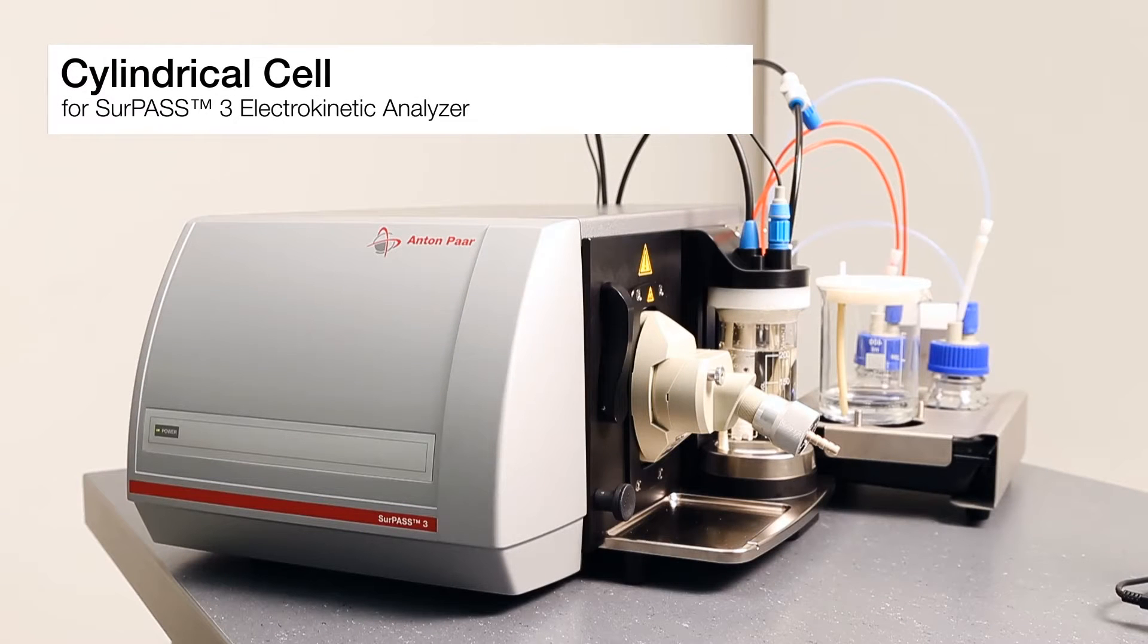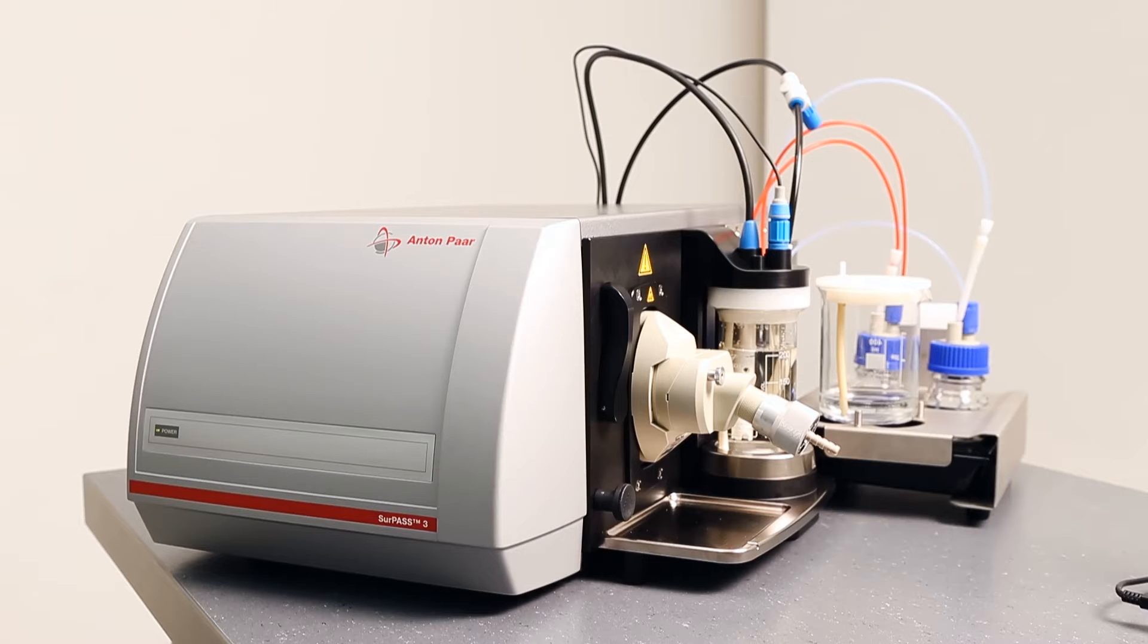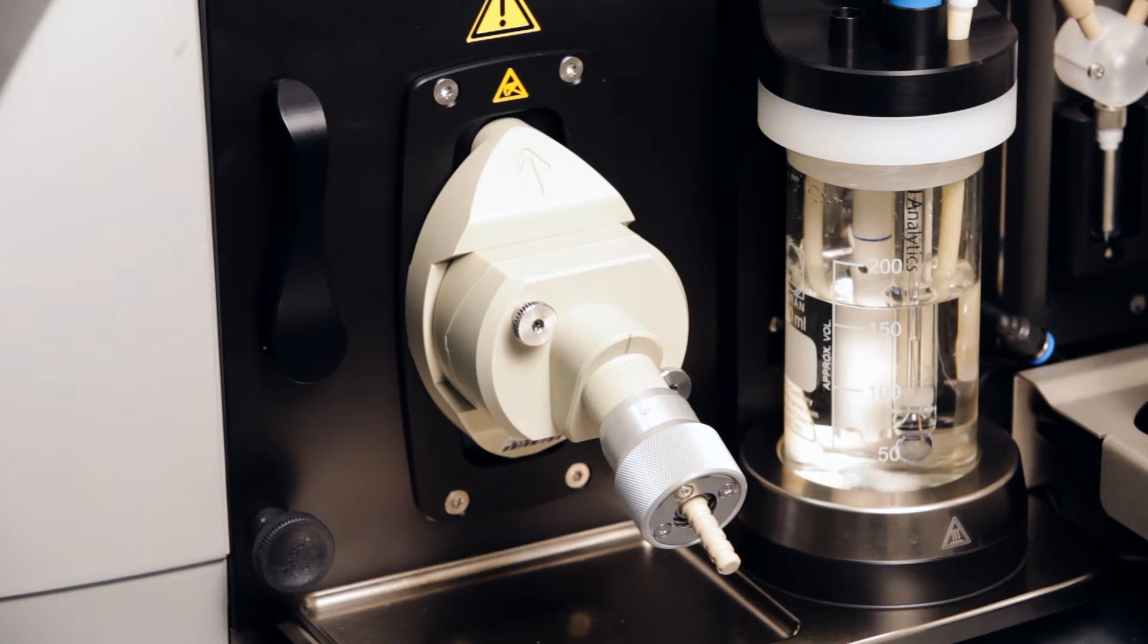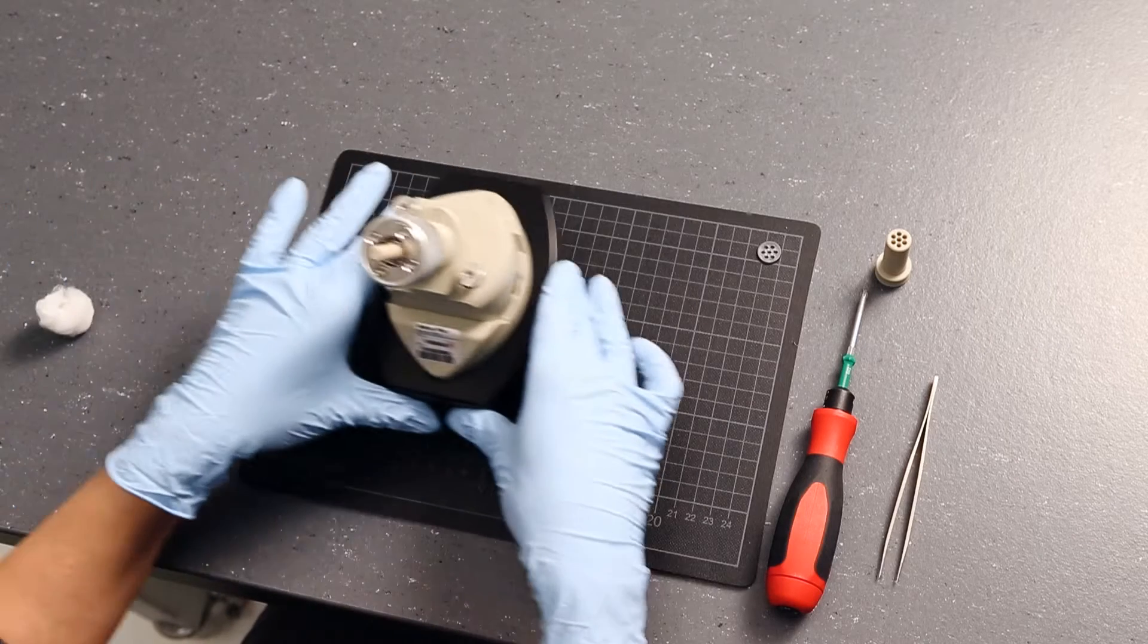This is the cylindrical cell for the SURPASS III electrokinetic analyzer. It's a measuring cell for fibers and granular samples. This video shows you how to mount a viscous sample and a granular sample in the cylindrical cell and how to mount the cell in SURPASS III.